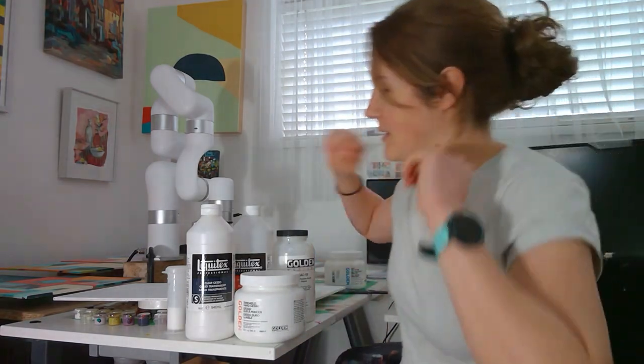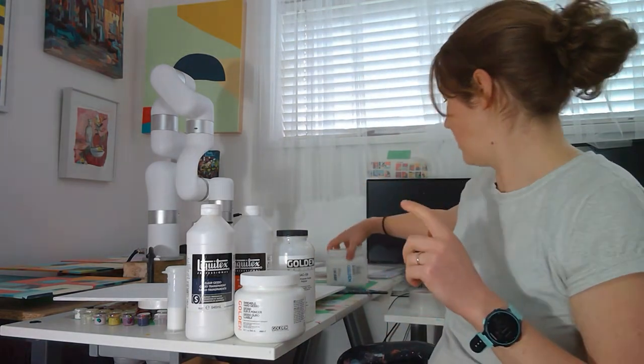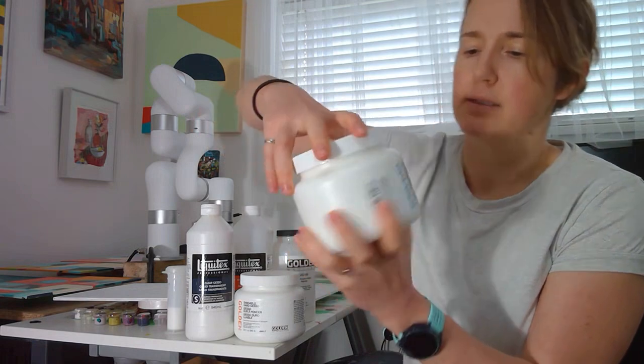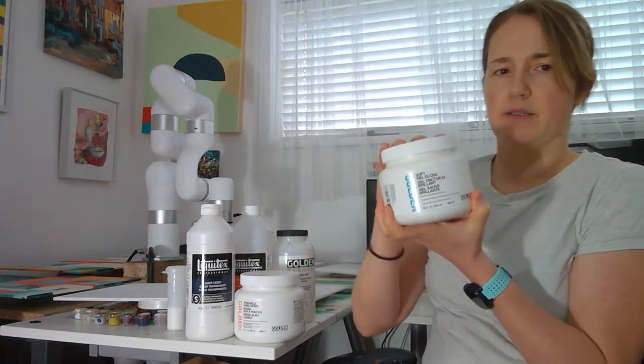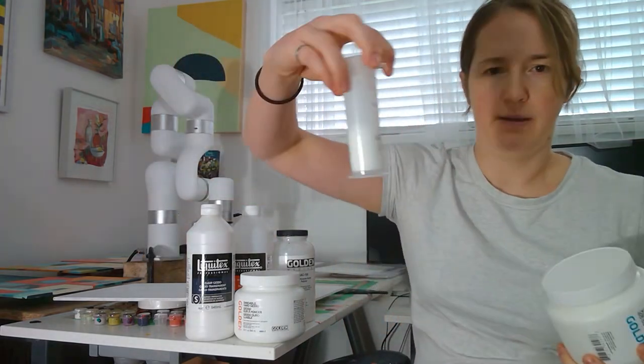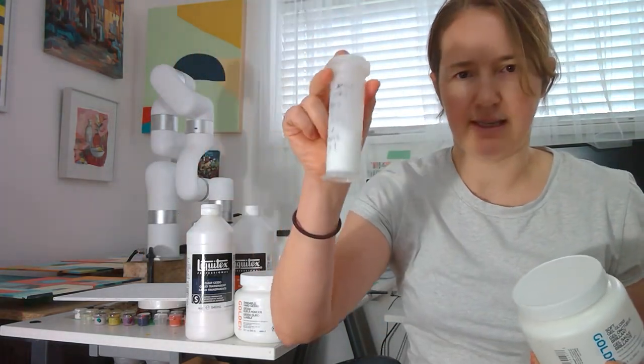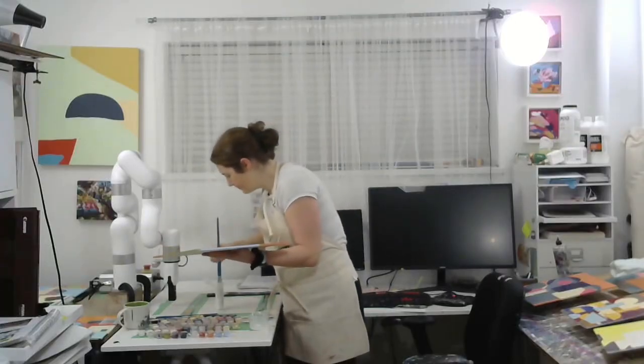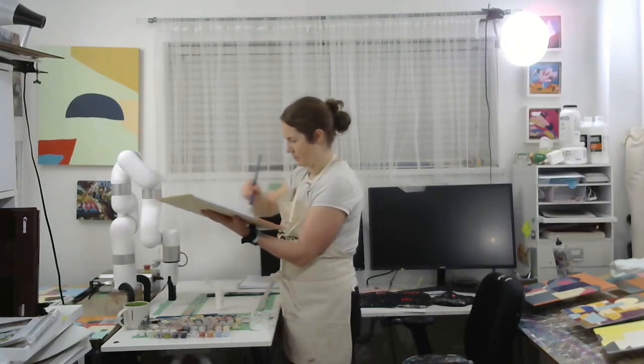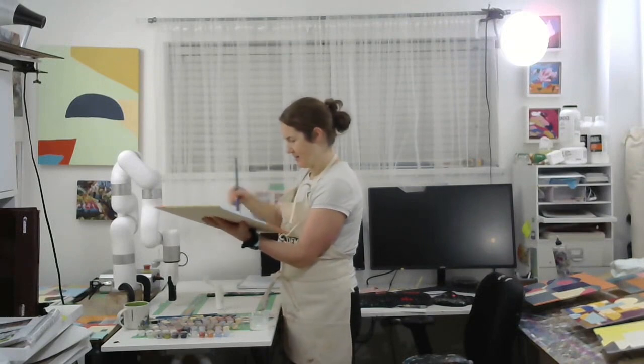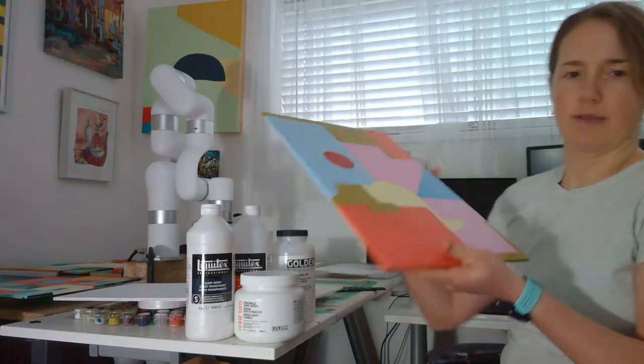The next thing that I want to share with you is the isolation coat. Right now these days I'm using Golden soft gel gloss, and I do two parts soft gel and one part water, and I mix it in this little vial. I paint three layers of this on a finished painting, so you'll see me doing that on this piece.